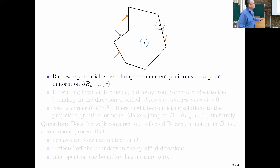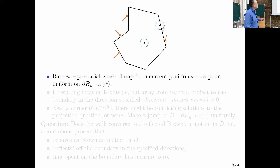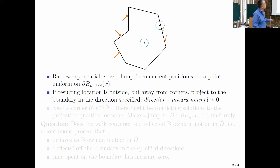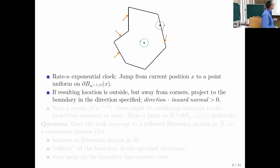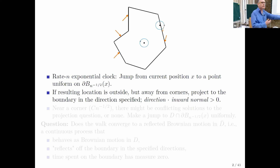This is when it's away from the boundary. But when it's close to the boundary but still away from corners, the resulting position could be outside the domain. Then what happens is that it gets projected back to the boundary along a direction that is specified — one direction for each face — and the direction satisfies the condition that direction dot the inward normal is strictly positive, meaning it points inward.